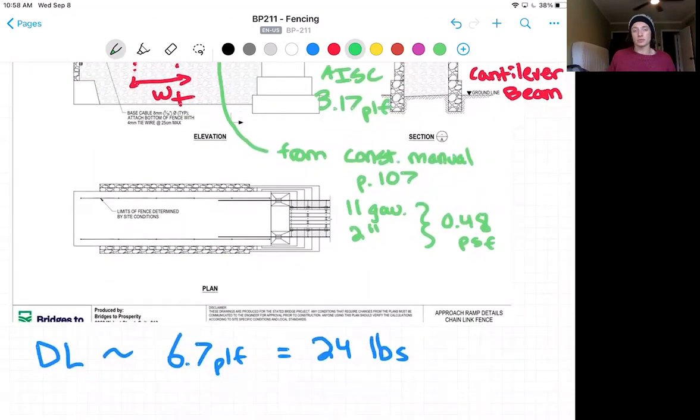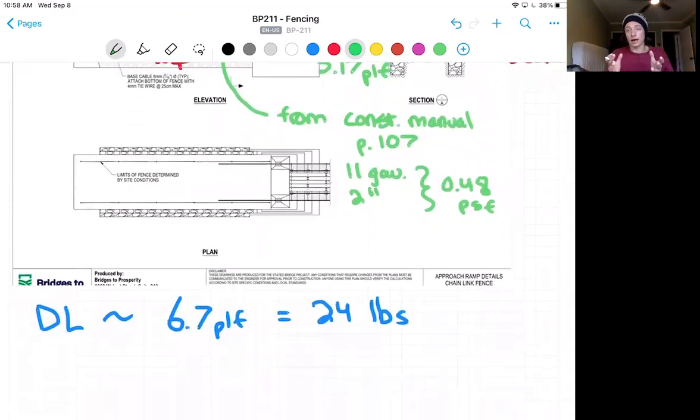Together, we can add that up to get our pounds per linear foot of dead load or around 24 pounds for a full dead load. And this is per a tributary width, so 24 pounds per post.